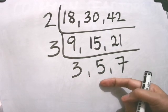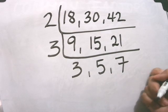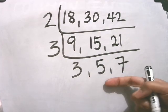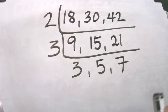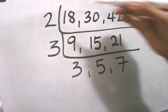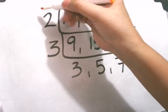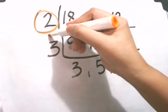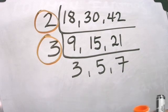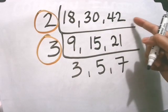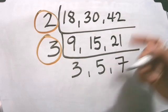These three here are prime numbers. This cannot be divided by any number except one and itself, so we stop. And these two numbers that are vertically written, this 2 and 3, are the common prime factors of 18, 30, and 42.